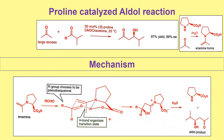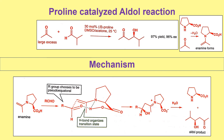Now let's look at other examples of proline-catalyzed reactions. These are highly efficient with hydroxy ketones as well. We have a hydroxy ketone and an aldehyde; imine formation takes place with the hydroxy ketone. The stereochemistry of this enamine is E — not Z. The reason is that when the enamine is trans, the hydroxyl group occupies a position analogous to the ketone, which is far more stable. Similarly, just as in the previous case, the carboxyl group hydrogen interacts with the aldehyde oxygen.